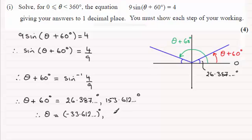I can see, though, that taking 60 degrees off this one is going to put me in this range for theta. And if you do that, you're going to find you get 93.612 and so on degrees.